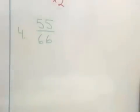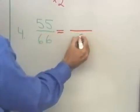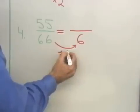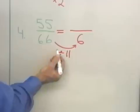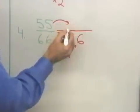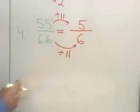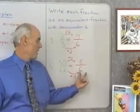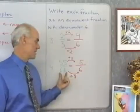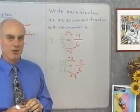For the second example, 55 over 66 — I'm going to write this as an equivalent fraction with a denominator of 6. To do that, I have to divide this denominator by 11. 66 divided by 11 produces 6. Since I did that to the denominator, I have to do the exact same thing to the numerator. Dividing the numerator by 11 produces a 5. So the fraction 5/6 is equivalent to the fraction 55/66, found by using property 2 — dividing numerator and denominator by the same non-zero number.